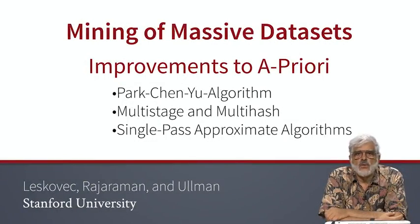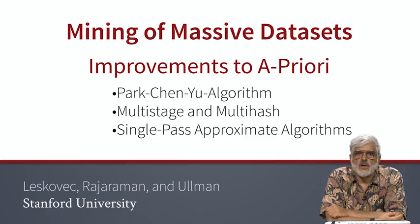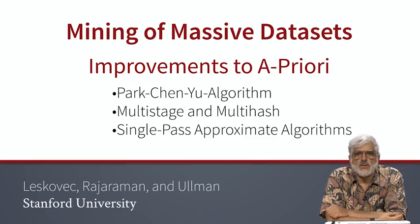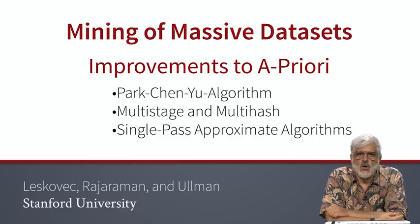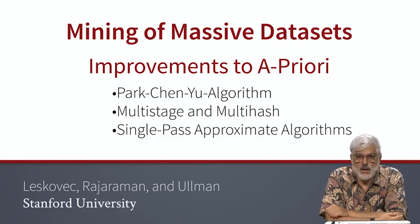In this unit, we're going to look at several algorithms that improve upon A Priori. One direction is to use the portion of main memory that the A Priori algorithm doesn't need on the first pass, because all it's doing is counting singleton item sets. That is the PCY, or Park Chen Yu algorithm. We'll also talk about further extensions called multi-stage and multi-hash. All these extensions to A Priori have the goal of minimizing the number of pairs that actually have to be counted on the second pass.